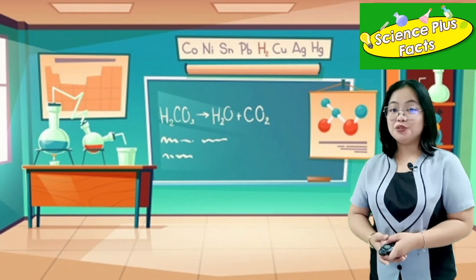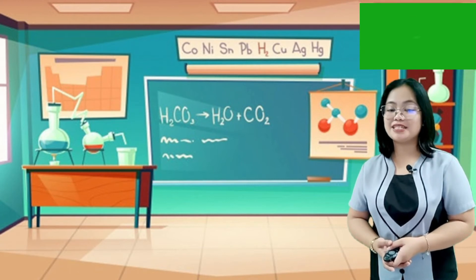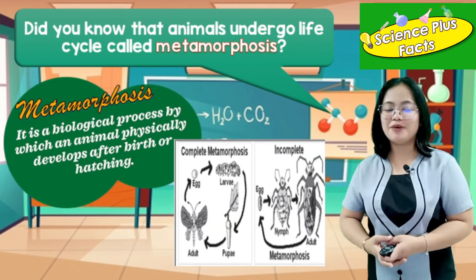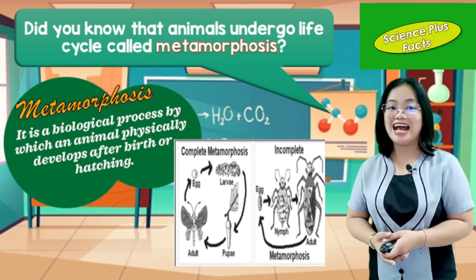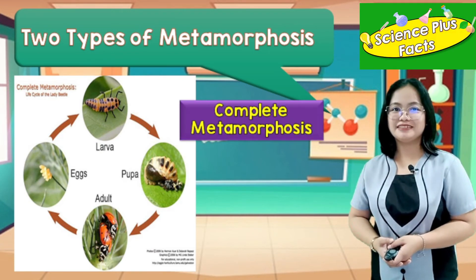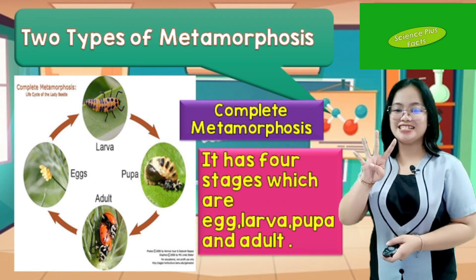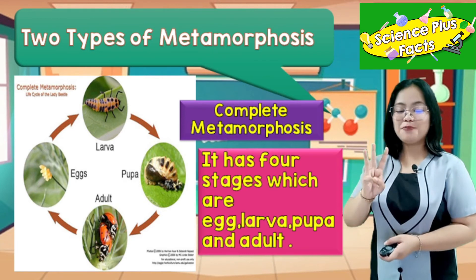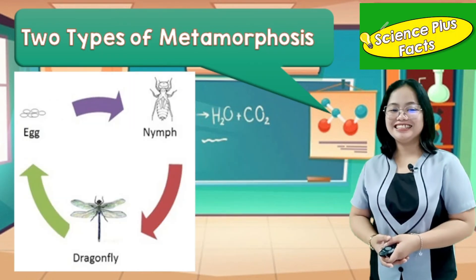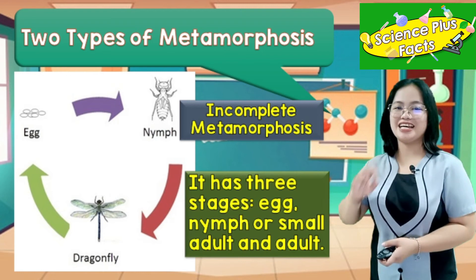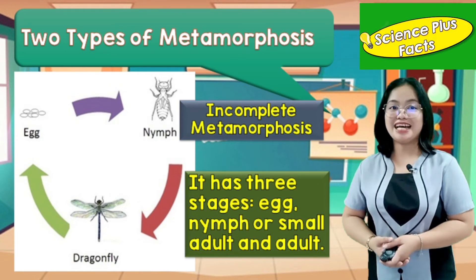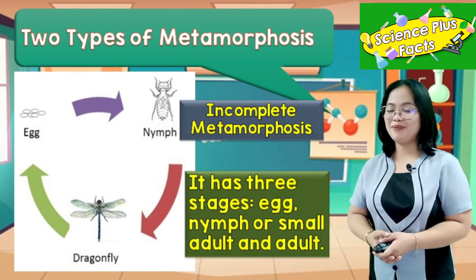Science plus facts! Did you know that there are animals that undergo a life cycle called metamorphosis? Metamorphosis is a biological process by which an animal physically develops after birth or hatching. Metamorphosis has two types: complete and incomplete. Complete metamorphosis has four stages: egg, larva, pupa, and adult. An example is the butterfly. Incomplete metamorphosis has three stages: egg, nymph, and adult. An example is the dragonfly. And that is our science plus facts!